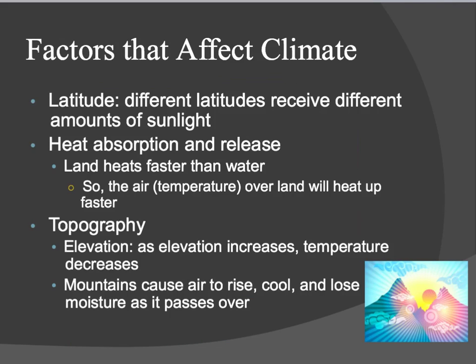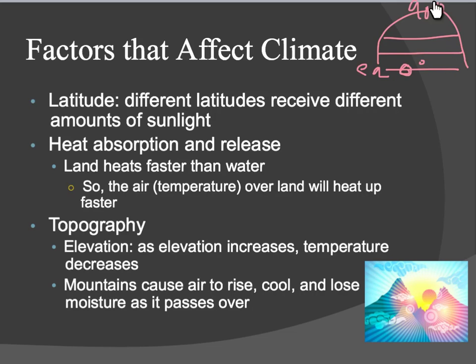There are certain things that will affect the climate of an area — like why San Francisco doesn't have a lot of change in temperature all through the year. One of these things is latitude. Different latitudes receive different amounts of sunlight. If you're nearest the equator, then your climate should be warmer. And if you're closer to the North Pole, then your climate is going to be colder, based upon the amount of sunlight that you're receiving.